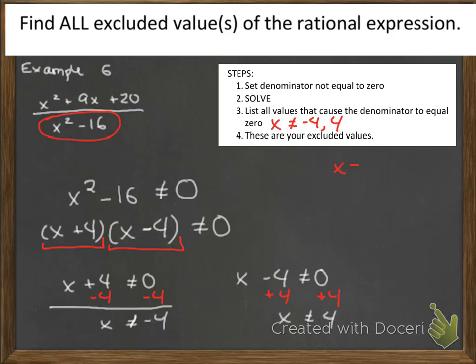If you wanted to write it out as x is not equal to 4, x is not equal to negative 4, you could. The way I wrote it out first is just a little bit of a shortcut.